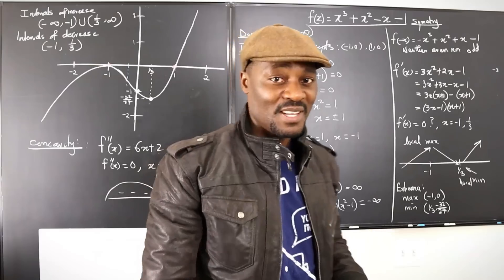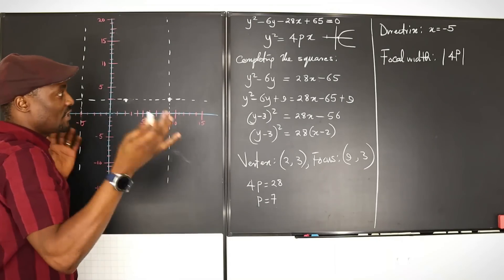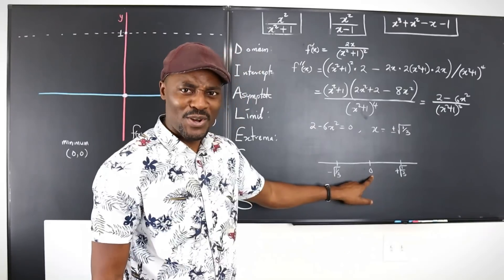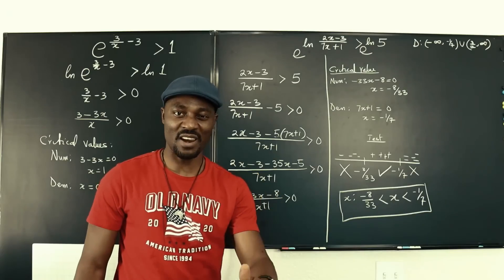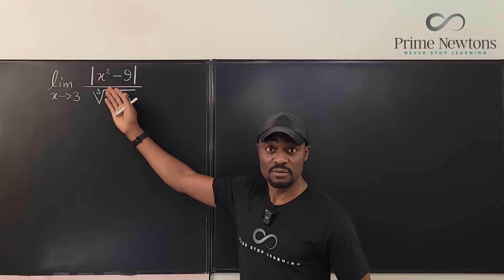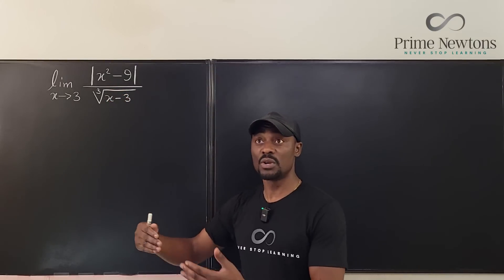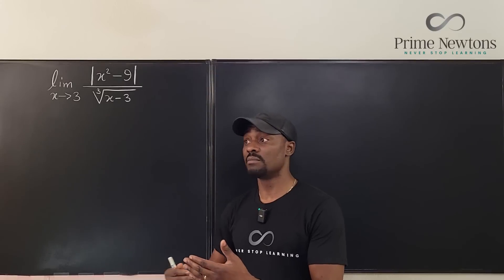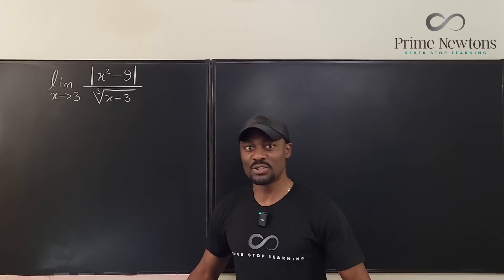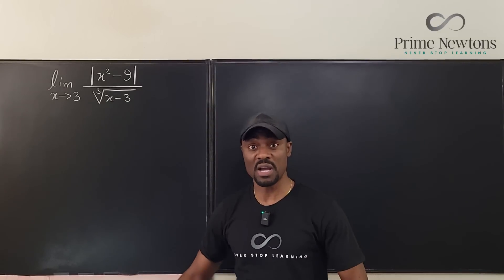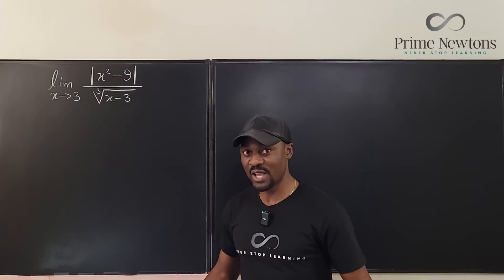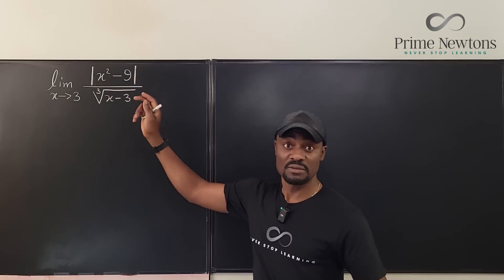The most important part is being able to rewrite any absolute value function in terms of its piecewise nature — just rewrite the absolute value function as a piecewise function and you'll be able to take any limit you want to take. Let's focus on the part that has the absolute value.